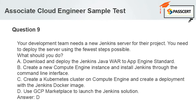Question 9: Your development team needs a new Jenkins server for their project. You need to deploy the server using the fewest steps possible. What should you do? A. Download and deploy the Jenkins Java War to App Engine Standard. B. Create a new Compute Engine instance and install Jenkins through the command line interface. C. Create a Kubernetes cluster on Compute Engine and create a deployment with the Jenkins Docker image. D. Use GCP Marketplace to launch the Jenkins solution. Answer: D.